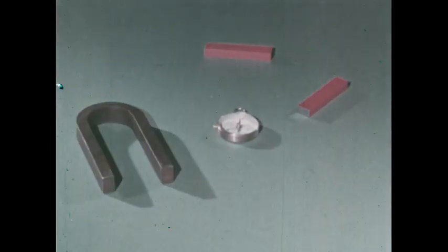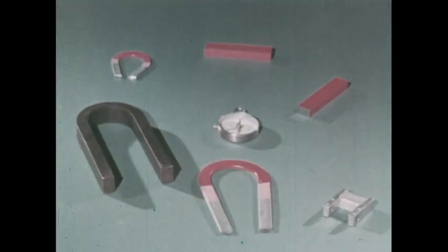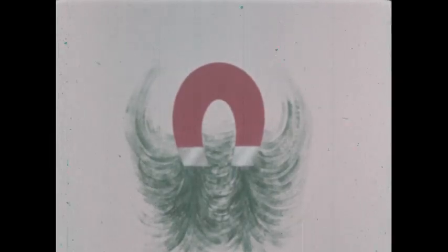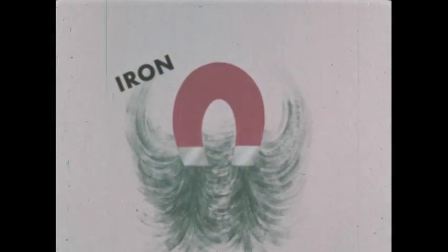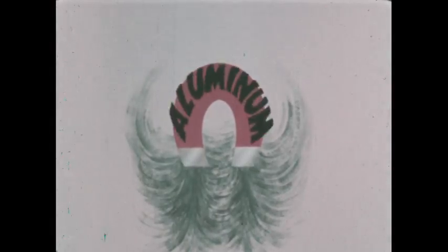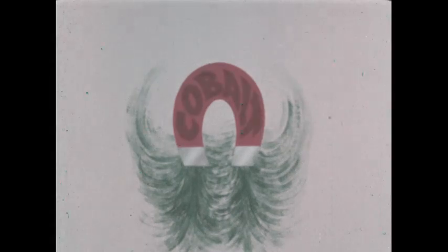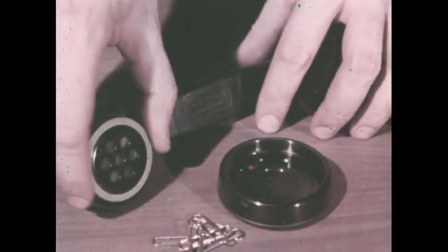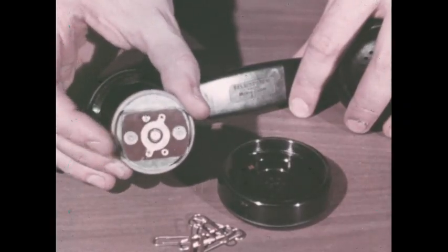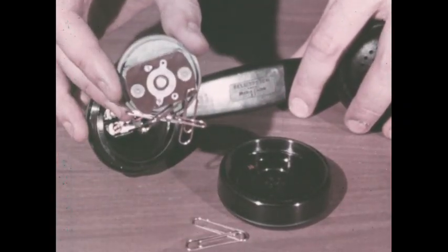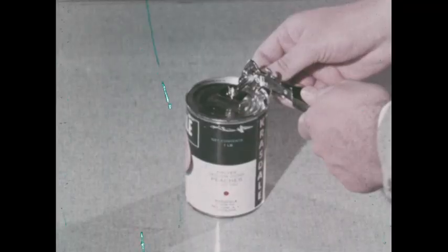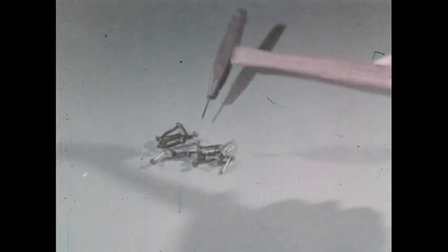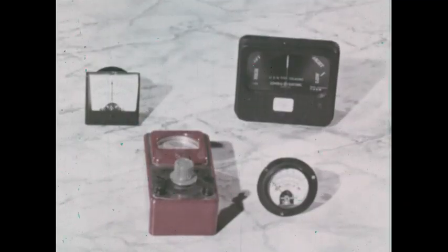Compass needles, bar magnets, horseshoe magnets, and other common magnets are called permanent magnets. They tend to hold their magnetism. Many powerful permanent magnets are made from a combination of metals: iron, aluminum, nickel, cobalt, and copper. Permanent magnets are used in many ways: in the earpiece of telephones, in magnetic pot holders, can openers, screwdrivers, hammers, microphones, and electrical measuring devices.